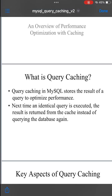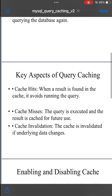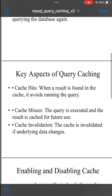Here's how it works. One: when a query is executed, MySQL checks the cache to see if an identical query result already exists. If it does, MySQL retrieves the result from the cache, which is much faster than running the query again.